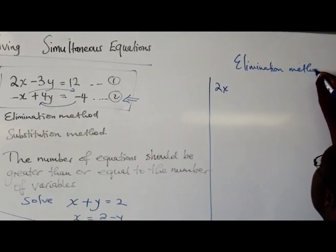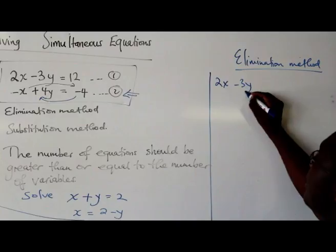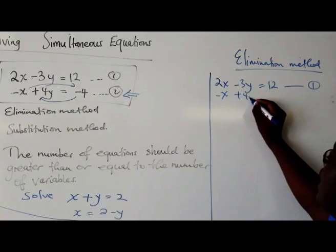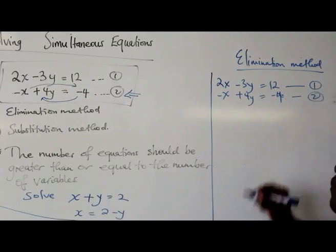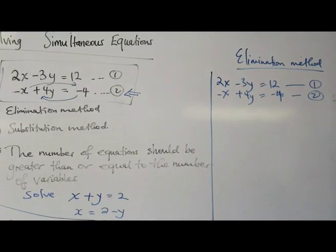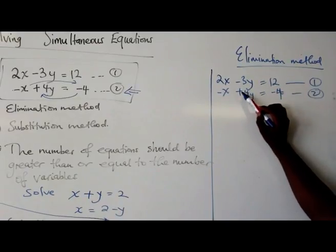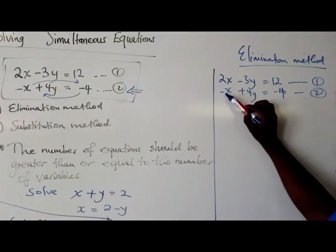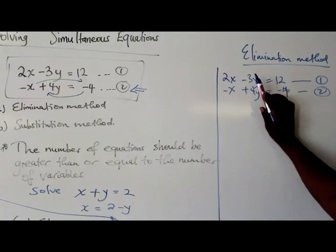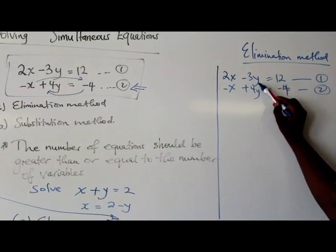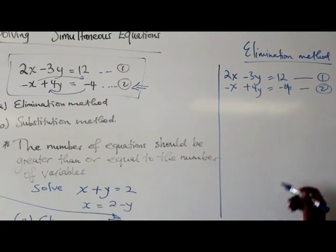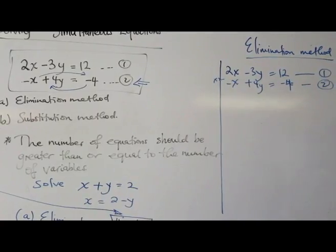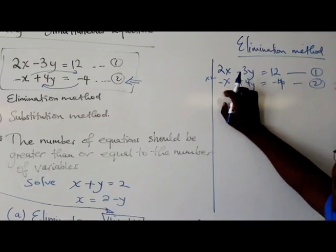Elimination method. We say 2x minus 3y is equal to 12. That's equation 1. And negative x plus 4y is equal to negative 4. That's your equation 2. So what we're going to do here is that we're going to try to make one of the combinations equal. So if it's 2x, I want to make this 2, so that if I add them, I get 0. Or I can play around with this, get the lowest common multiple, and if I add or subtract them, I get 0. So the easiest to do is for me to multiply equation 2. If I multiply by 2, I'm going to get a number that will make me be able to eliminate x.